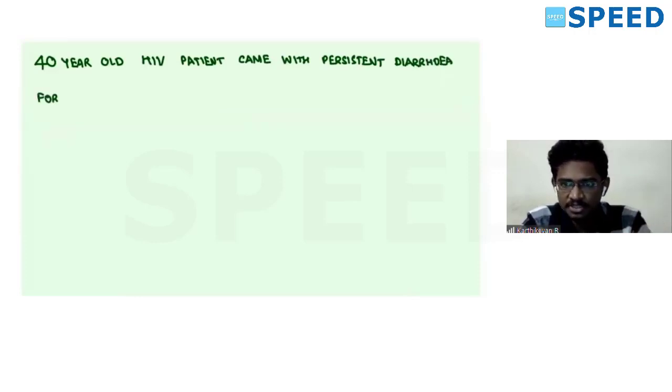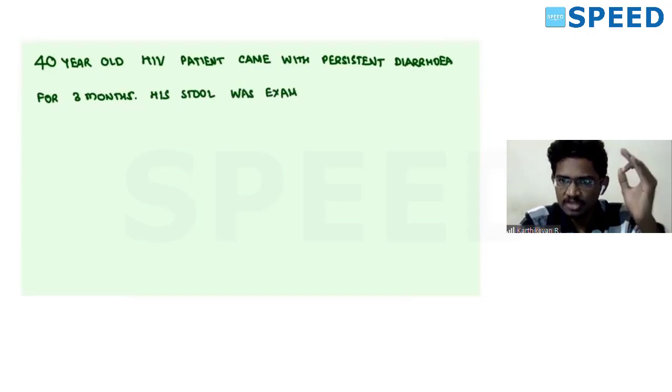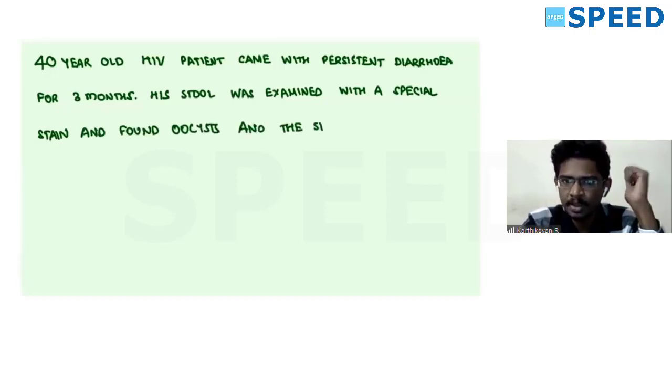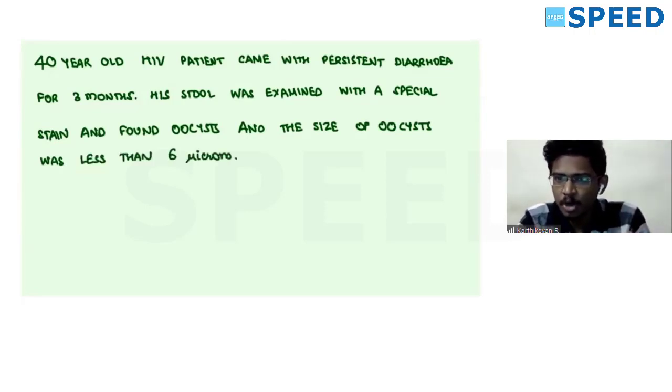A 40-year-old HIV patient came with complaints of persistent diarrhea for at least 3 months. Even in HIV, diarrhea is a characteristic feature, but still if it is persistent, one stool examination must be done. This stool was examined with a special stain and lot of oocysts were found. The size of the oocysts were found to be less than 6 micrometers.